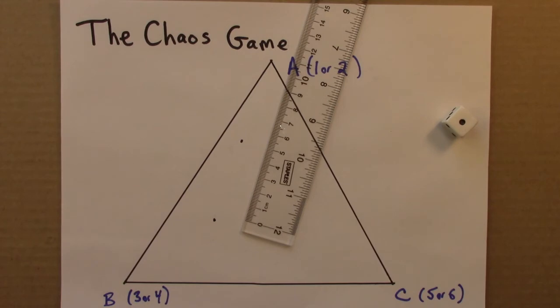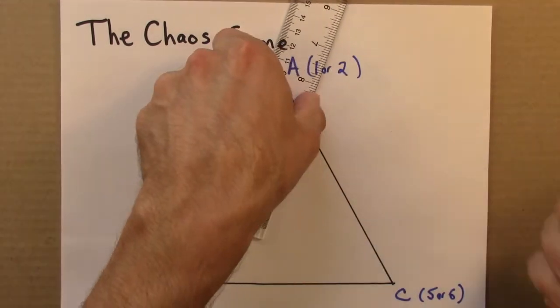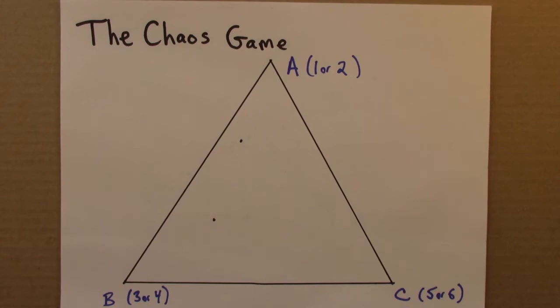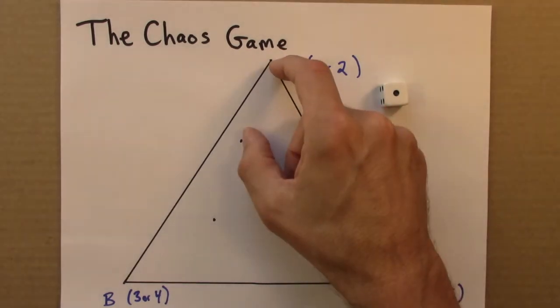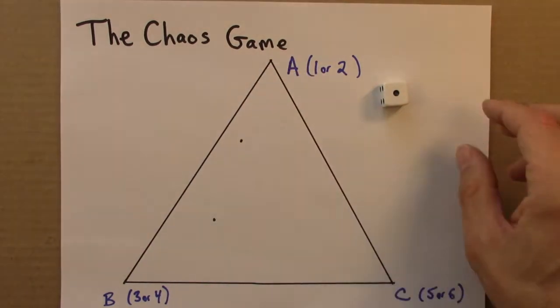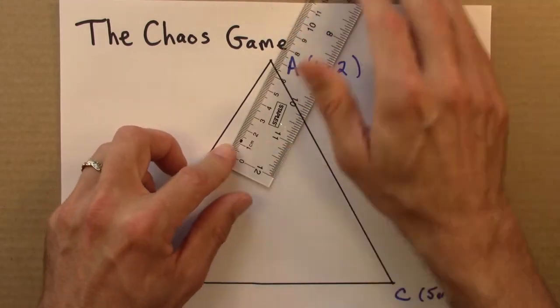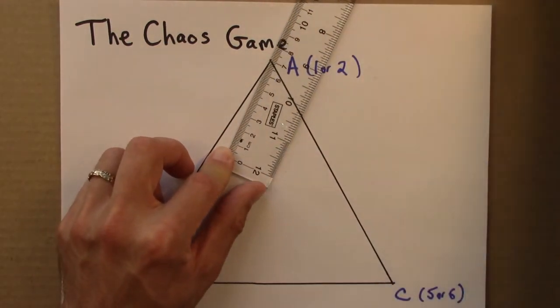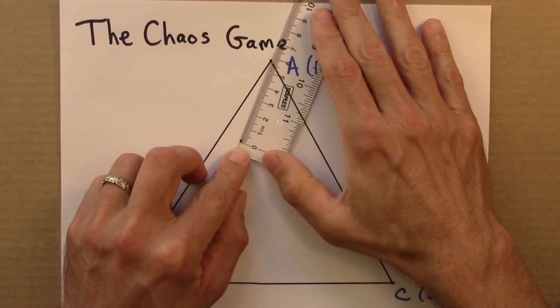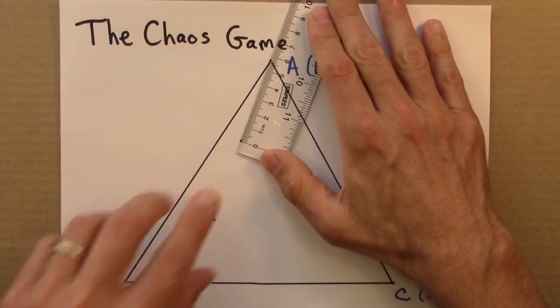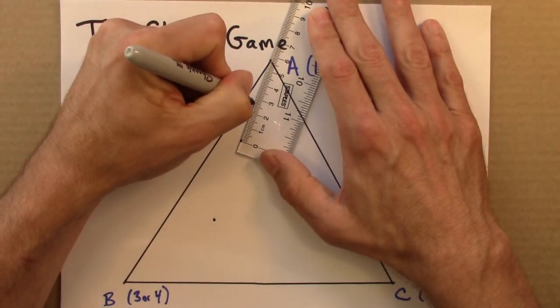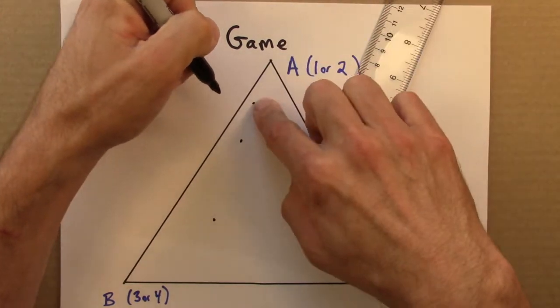Now we'll do the next step. I'll need to roll again. I cannot keep it on the screen. One again, okay. That means I'm again going to move towards A, only going halfway. Here we go. I am about 5 and a half. So I'm going to go a little more than 2 and a half. There. That would be my next step.